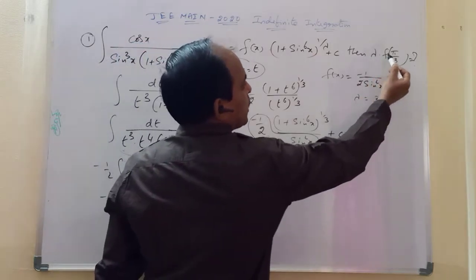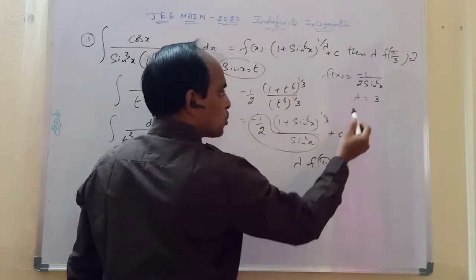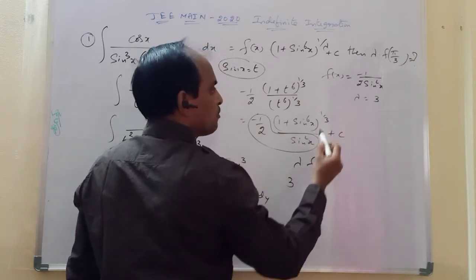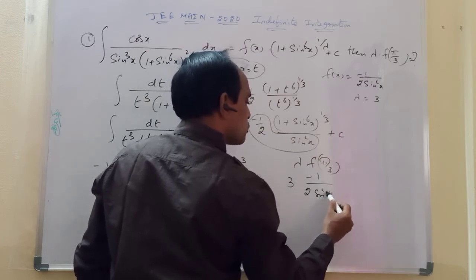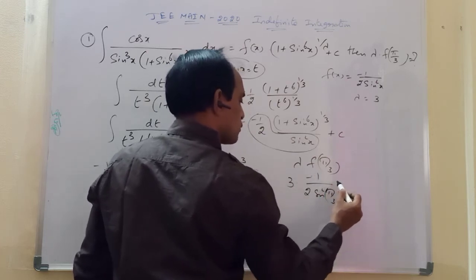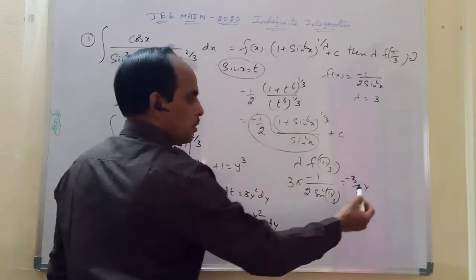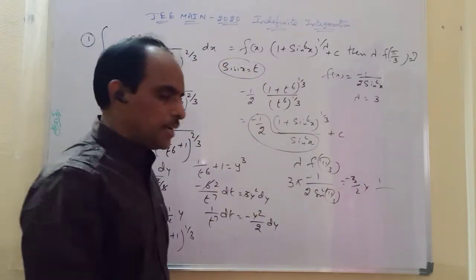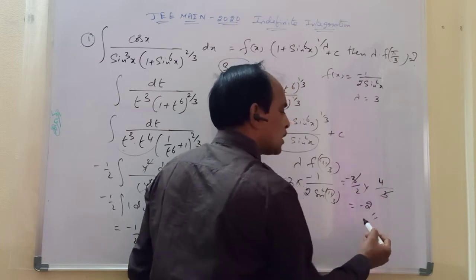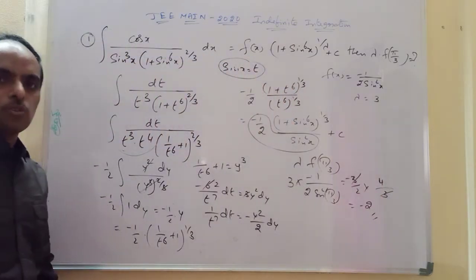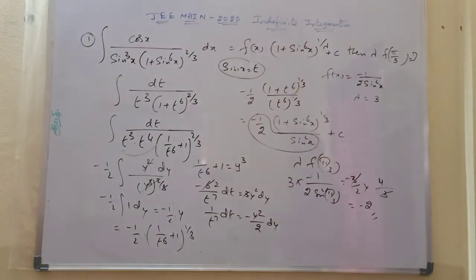So we need to find λ · f(π/3). With λ = 3 and f(π/3) = minus 1/2 · sin²(π/3), this gives 3 × (minus 1/2) × (√3/2)² = minus 3/2 × 3/4 = minus 9/8. Wait — sin(π/3) = √3/2 so sin²(π/3) = 3/4, giving minus 3/2 × 3/4 which simplifies to minus 2. The answer is minus 2.